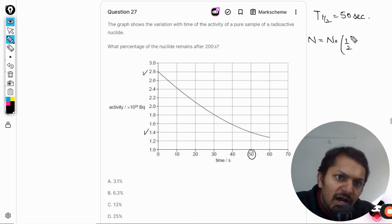So N naught, 1 by 2, 200 divided by 50, which is 4. It means it will be N naught divided by 16. This is the number of nuclei remaining in the sample.